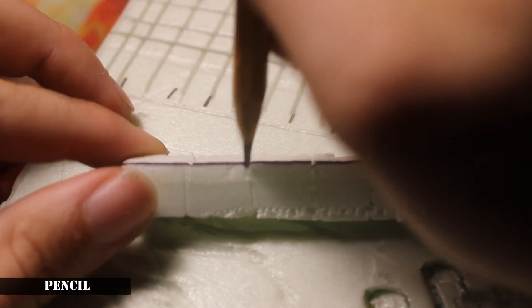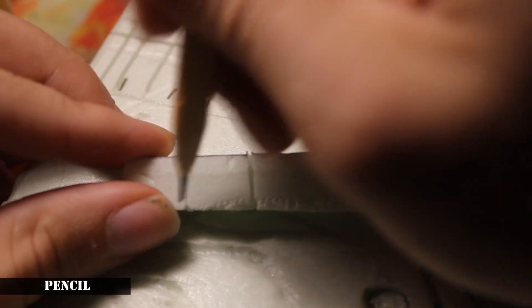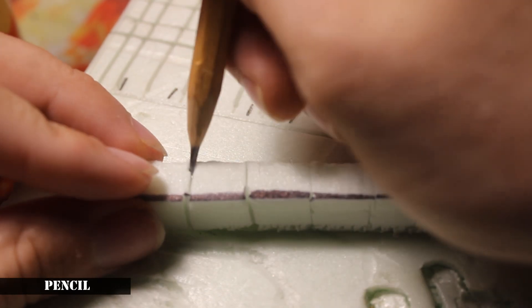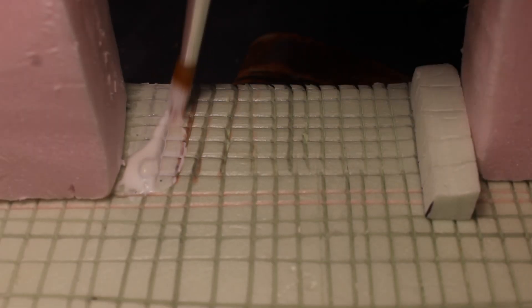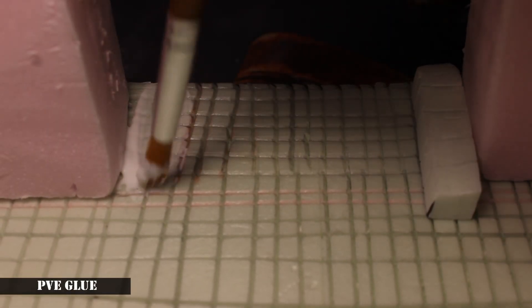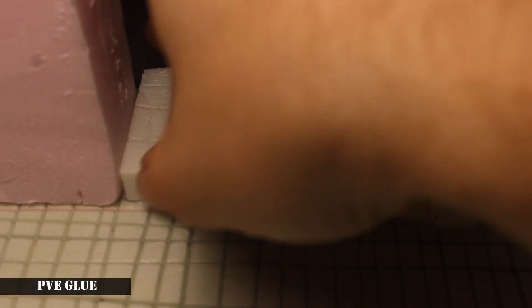I start making a brick wall from styrofoam and I use a pencil to highlight the brick texture. After that, I use PVA glue to attach the brick wall to the base and secure it with pins.